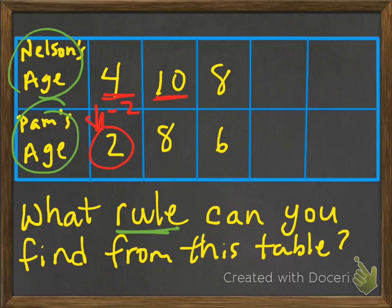Same with 10. If Nelson is 10, we subtract 2. Yes, we get 8. So the rule works. Let's try it one more time. 8 minus 2. Do we get 6? Yes. So the rule works.